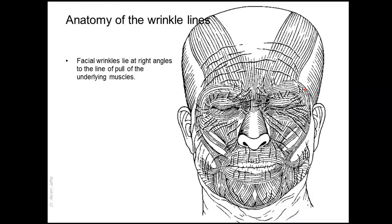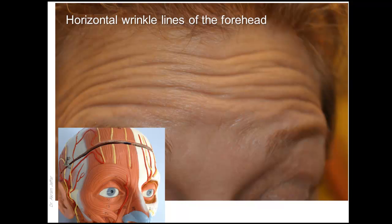Facial wrinkles lie at right angles to the line of pull of the underlying facial muscles. Horizontal wrinkle lines of the forehead are formed by the frontalis muscle of occipitofrontalis, so the wrinkle lines are perpendicular to these muscle fibers. We actually have two frontalis muscles, one on the right and one on the left, and centrally there are no muscle fibers.